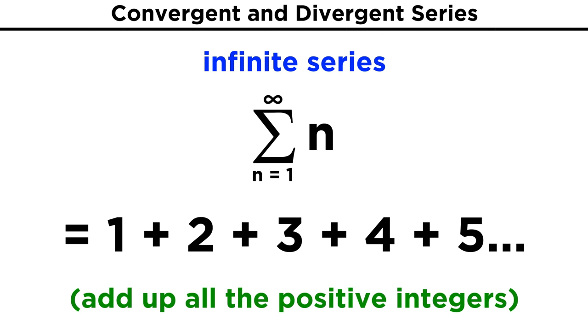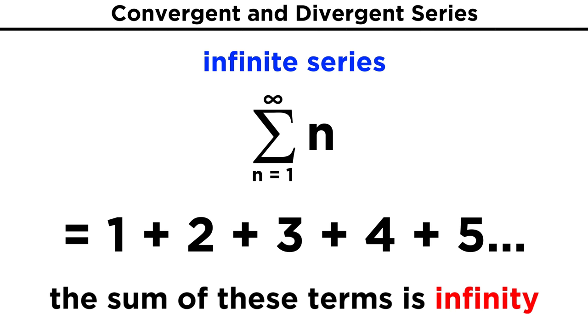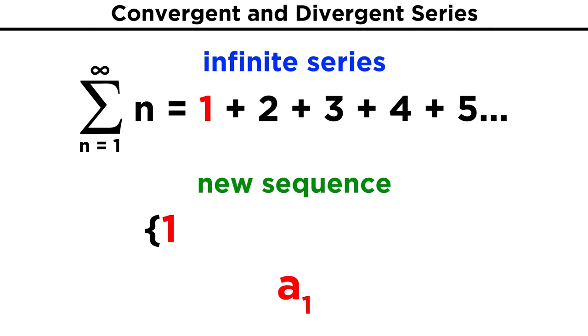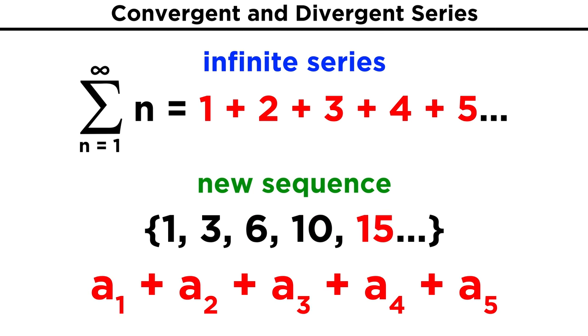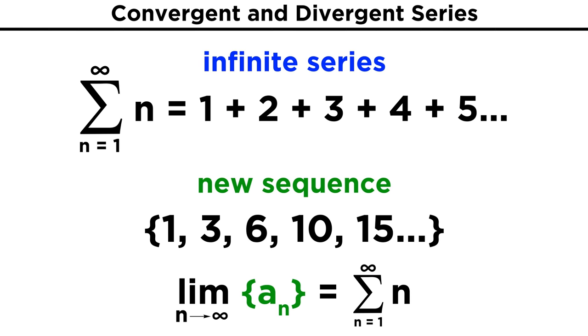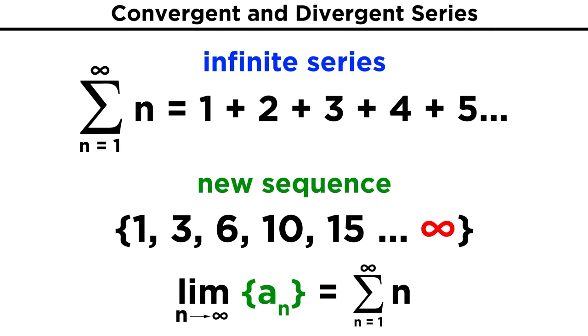Starting again with a simple example, simply n, we can easily see that if we were to add up all the positive integers, which themselves go to infinity, certainly their sum will also be infinite. This can be demonstrated by forming a new sequence, where the first term is the first term of the series, and then the sum of the first two terms of the series, and then the first three terms, and four terms, and so forth. The limit of this sequence is the sum of the original series, and the sequence will go to infinity, so the original series is clearly divergent.